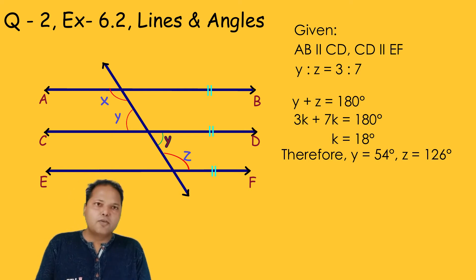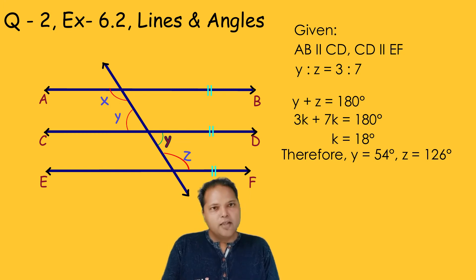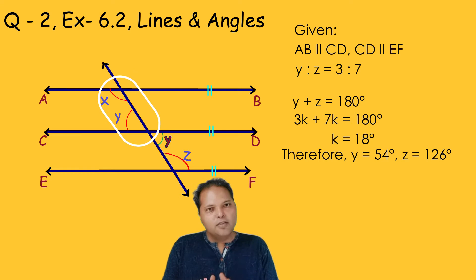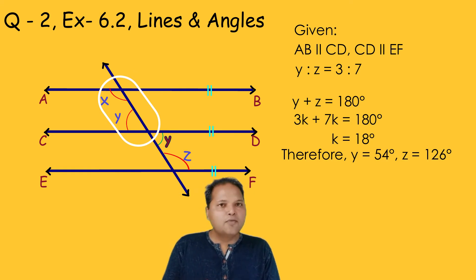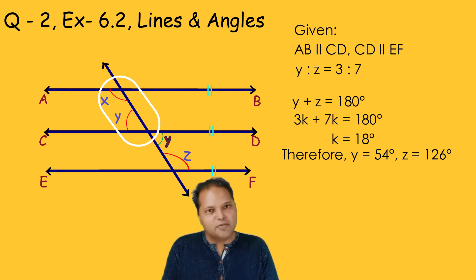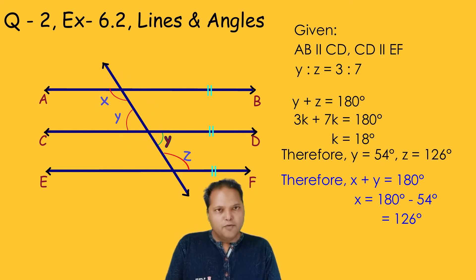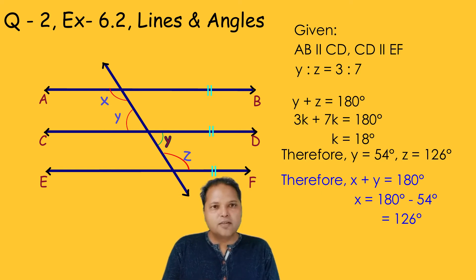Now let us find the value of X. Since line AB and CD are parallel to each other, we can say that X plus Y is equal to 180 degrees. This is because X and Y are co-interior angles on the same side of the transversal, forming a pair of supplementary angles.